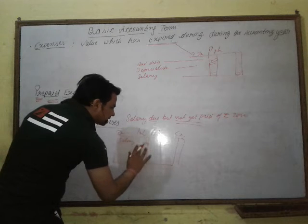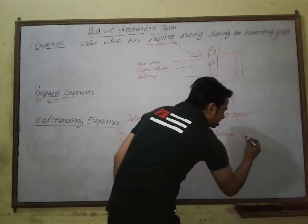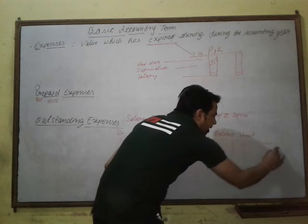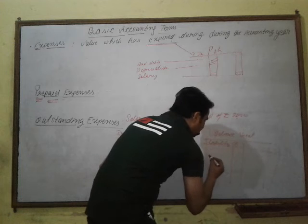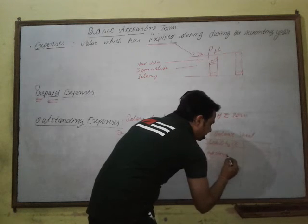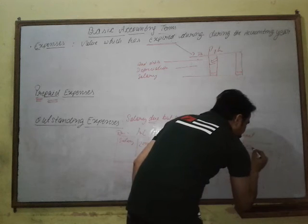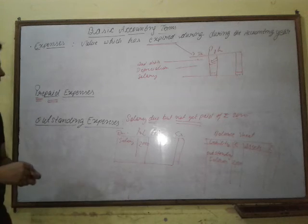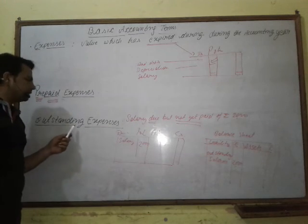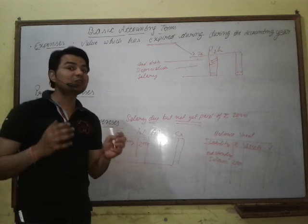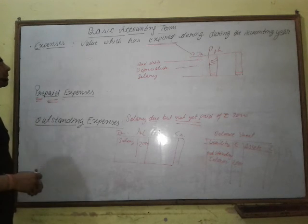You have not paid it, but it should still be shown as an expense. When you prepare the balance sheet, it is also your liability, so in the balance sheet on the liability side you write 'outstanding salary — ₹2000.' This salary is due but not yet paid — it is an expense to be shown in one accounting year, and it must also be shown on the liability side of the balance sheet.